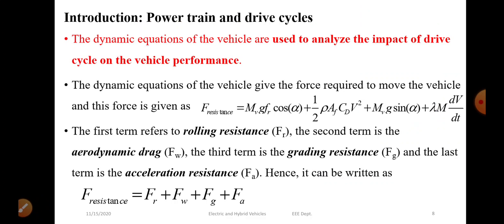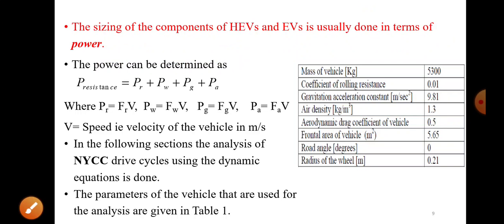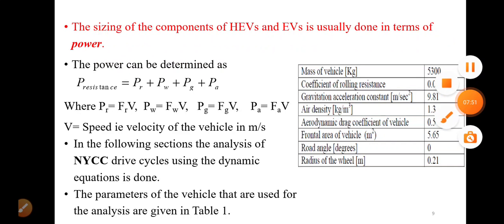When we do the sizing, we determine the power. The power equation is force multiplied by velocity. So multiplying each force term by velocity V: P_resistance = P_r + P_w + P_g + P_a, where P_r = F_r × V, P_w = F_w × V, P_g = F_g × V, and P_a = F_a × V. Here V is the speed or velocity of the vehicle in meters per second.